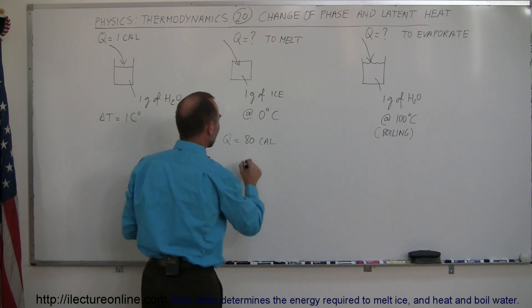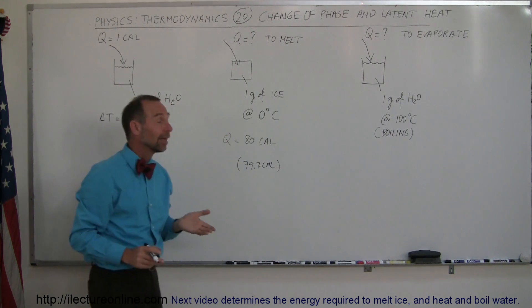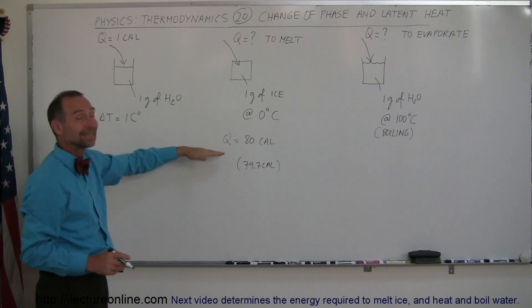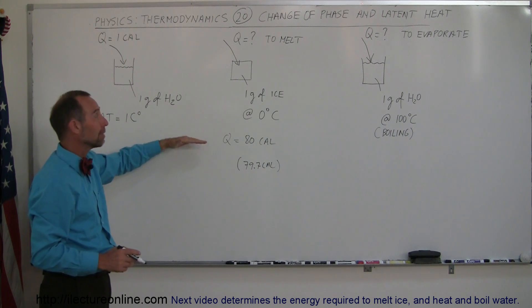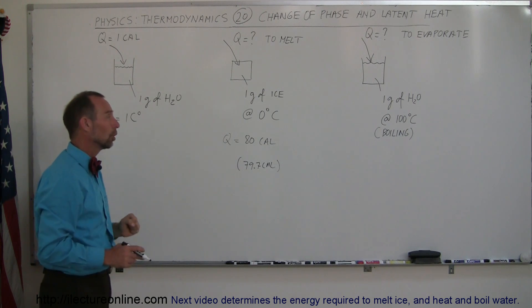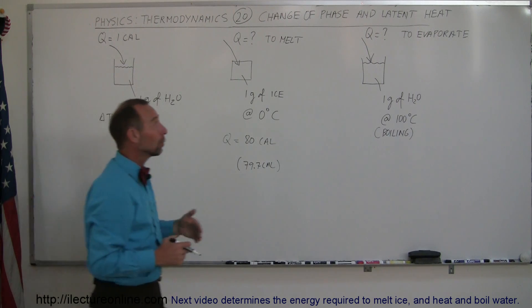Technically it's 79.7 calories but we typically call it 80 calories. Compared to how much it takes to raise temperature by one degree centigrade, it takes 80 times as much to completely melt one gram of ice at zero degrees centigrade to liquid at zero degrees centigrade - an enormous amount of heat.